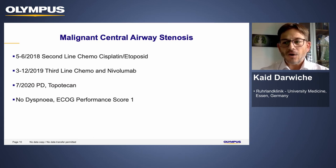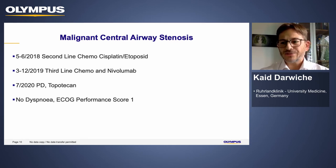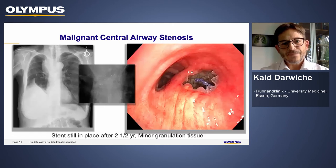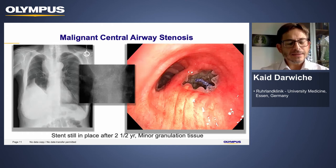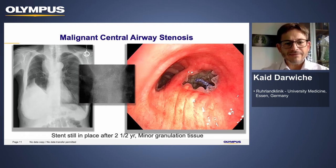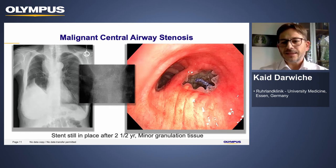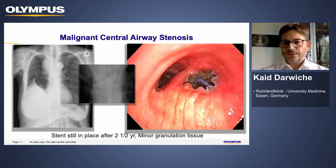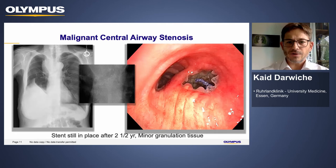The patient is still almost symptom-free, ECOG 1, despite mild tumor progression. These are the recent images after two and a half years. On the left image, the radiograph shows the right upper and middle lobe still ventilated. The stent is in place, and on the endoscopic image, the stent is still in place with only mild granulation tissue. A very good case in an unusual biology of a small cell lung cancer.